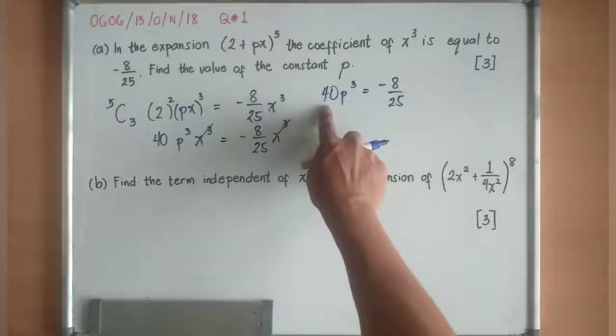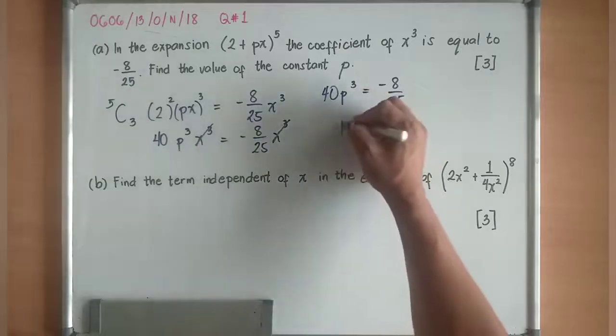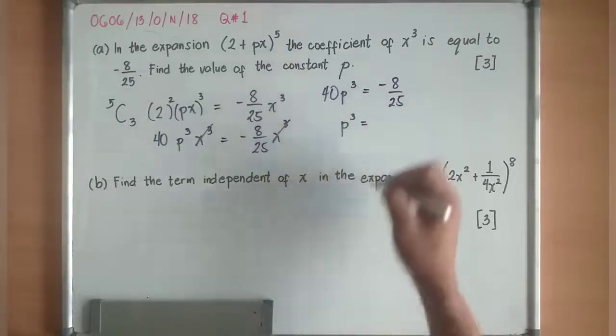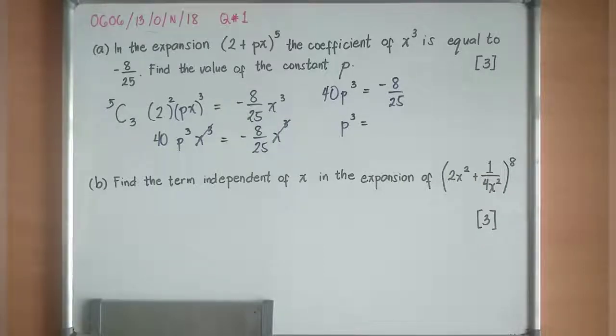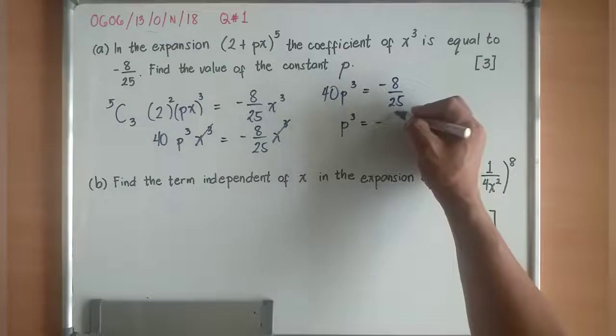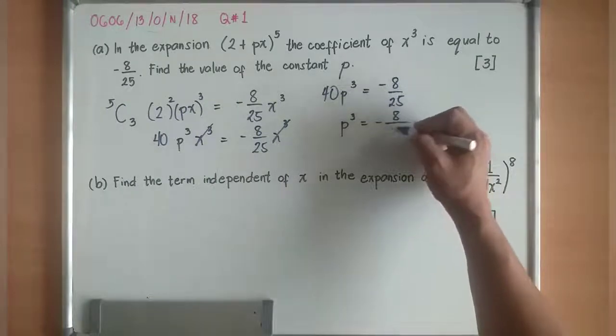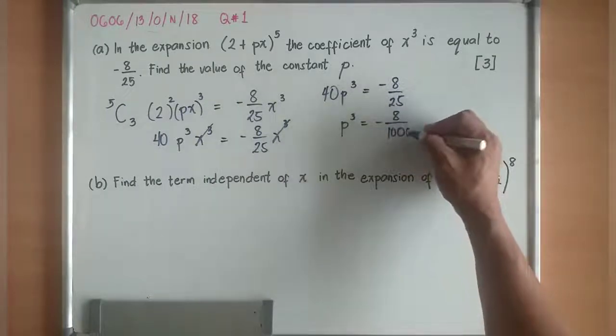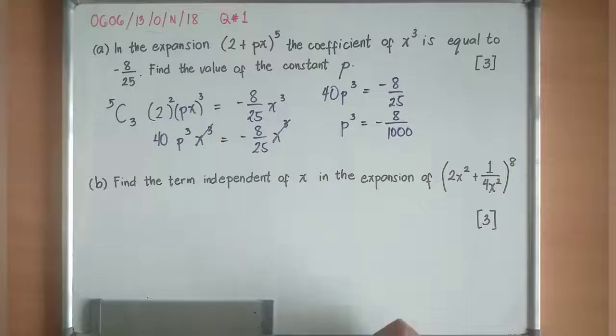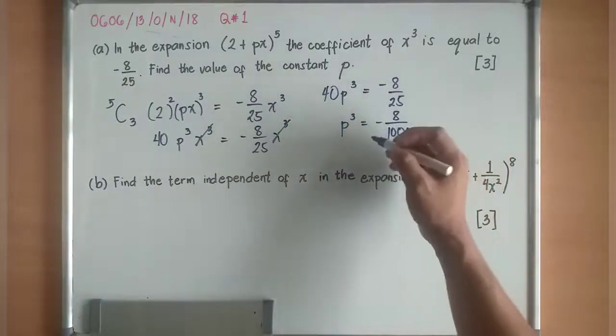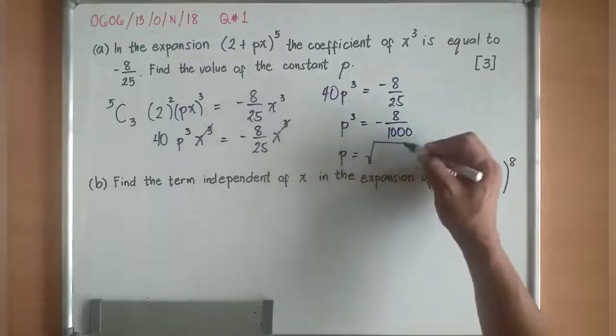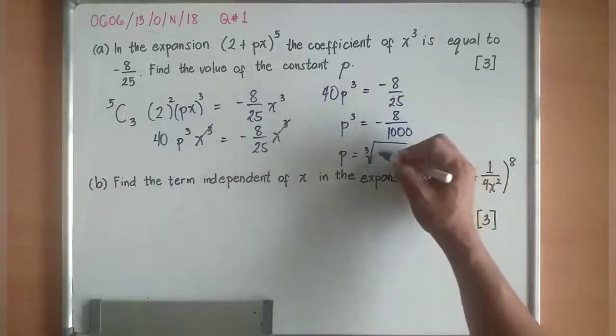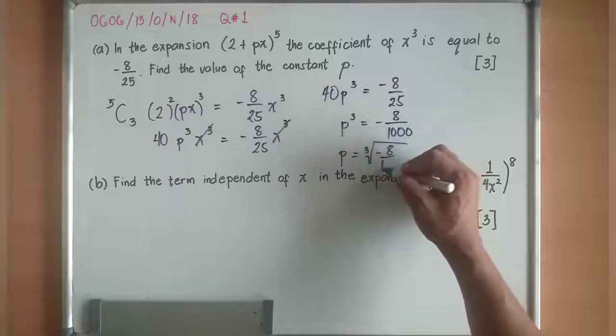I want to remove that 40. It will become p^3 is equal now to -8/1000. And always remember to remove that cube, I need to cube root both sides. So p is equal now to cube root of -8/1000.